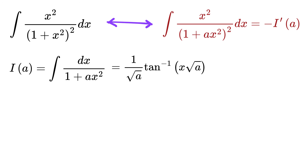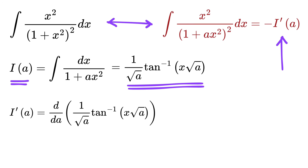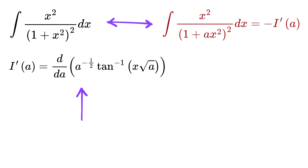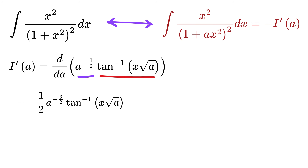Can you see something? Yes, we have this expression which almost looks like the integral we need to find. To find its value, we will use I of a and differentiate it with respect to a — that is, the derivative of 1 over root a times tangent inverse of x root a with respect to a. Rewrite 1 over root a as a raised to minus 1 half. We can use the product rule. So let the first term be a raised to minus half and the second term be tan inverse of x root a. Applying the product rule, the derivative of the first term is minus 1 by 2 times a raised to minus 3 by 2, and the second term remains as tan inverse of x root a.